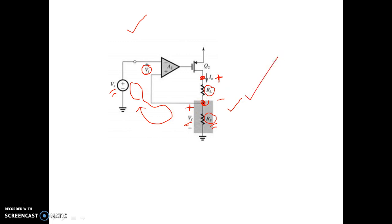So this is current series feedback topology because current sampling is done in the output network and series mixing is done in the input network. So this is called current series feedback topology.